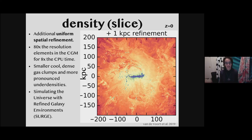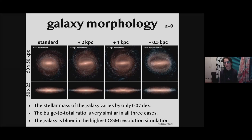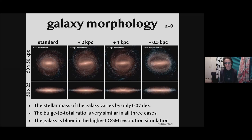Does this additional resolution affect the central galaxy? I'm not 100% certain. Overall, the stellar mass is pretty similar between all four runs — going from only mass refinement all the way up to 500 parsec CGM resolution — they're all disk-dominated but with a substantial bulge. There is some hint of more star formation at late times at the highest resolution, making the galaxy look a bit bluer, but with only one simulation we can't say if that's a trend. We'll leave that for future work.